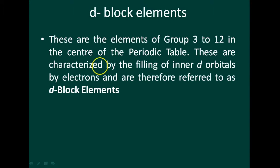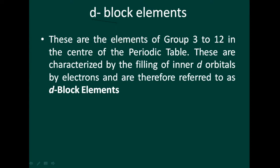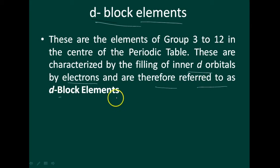Next is about d-block elements. I completed s-block and p-blocks; now consider the d-block elements. These are the elements of group 3 to 12 in the center of the periodic table. These are characterized by the filling of inner d orbitals by electrons and are therefore referred to as d-block elements.